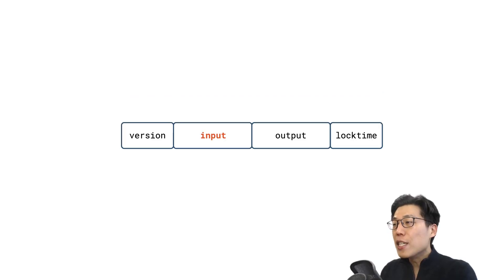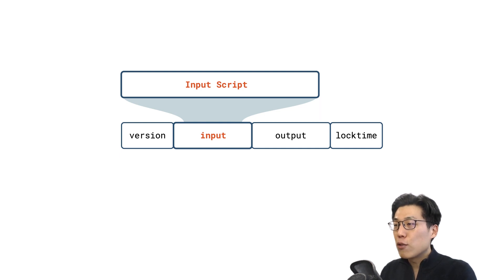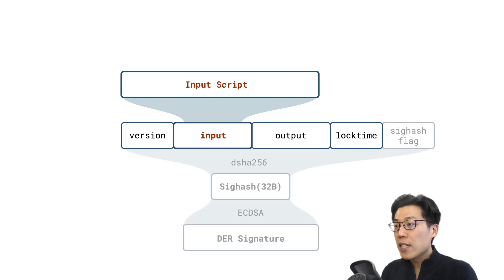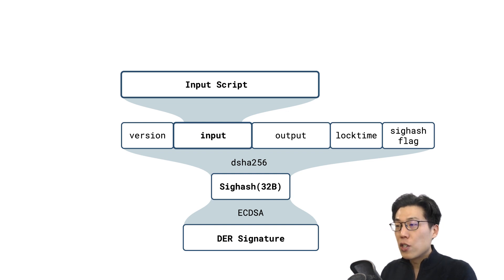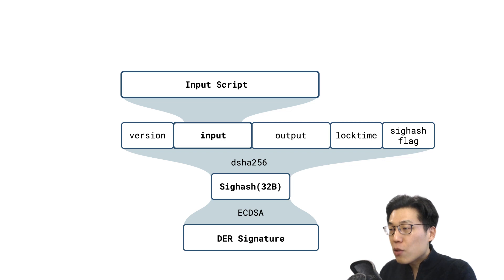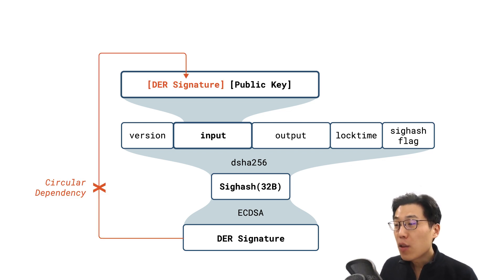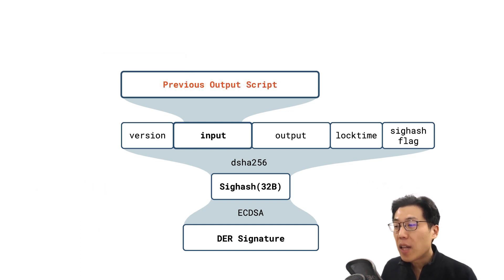Transaction malleability occurs in the input scripts of a transaction. The reason why the input script can be modified is because it is the only part of the transaction data structure which is never committed to the signature. In fact, when computing the signature hash, which is then signed by the ECDSA algorithm, the complete input script does not yet exist, since this includes the signature itself. So instead, the previous output script is placed into the input script field during signing.